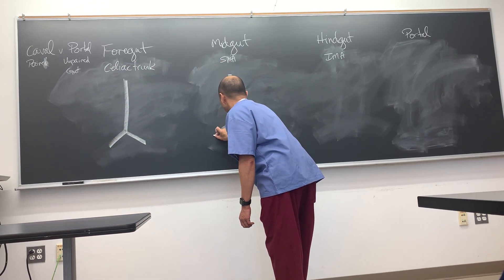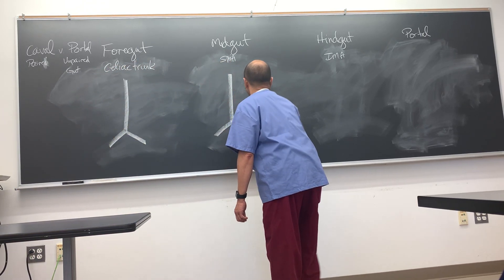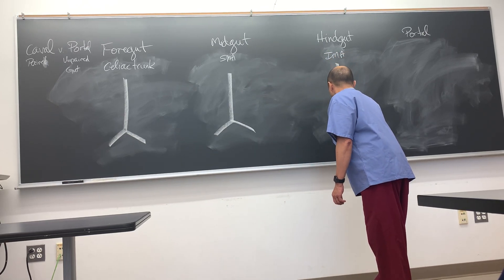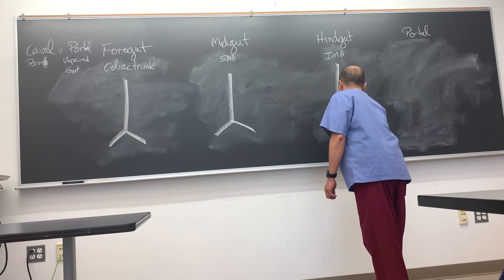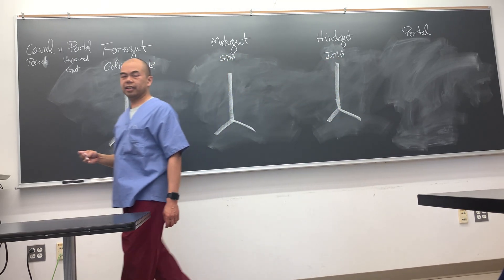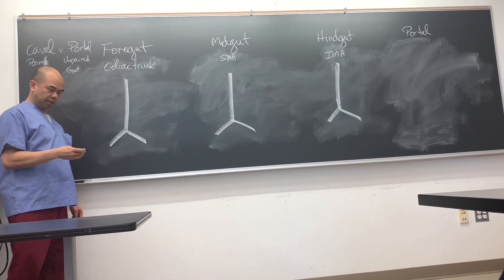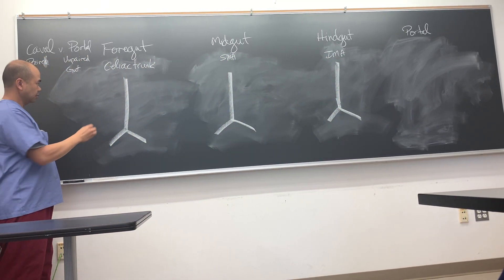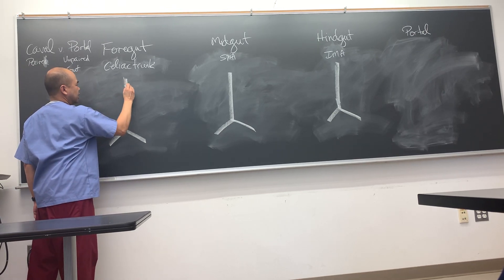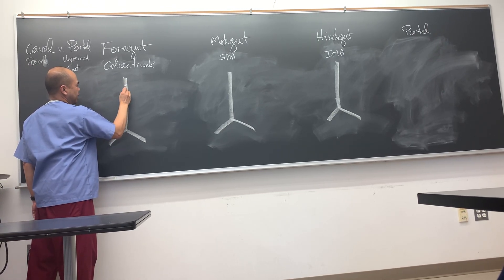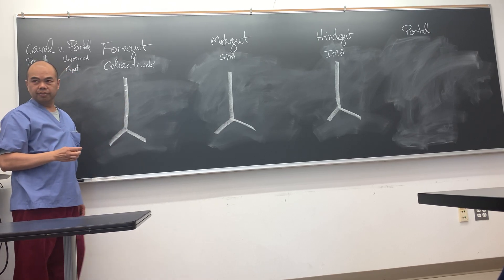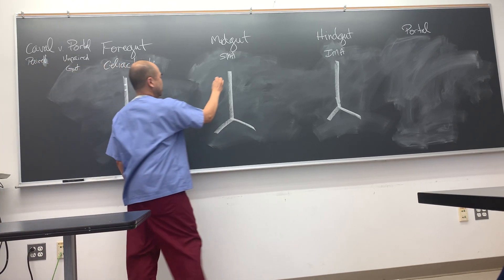Here is the aorta and the common iliac arteries. The celiac trunk is located here, the SMA is located here, and the IMA is located here, generally speaking.